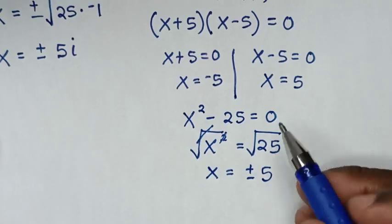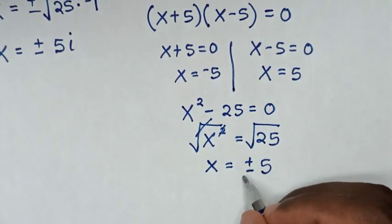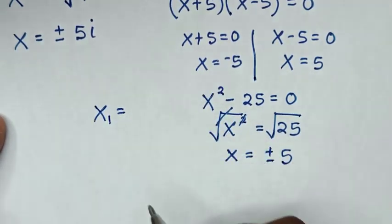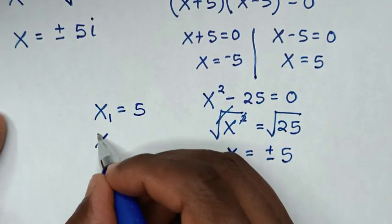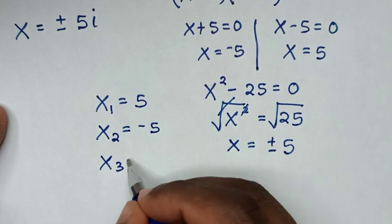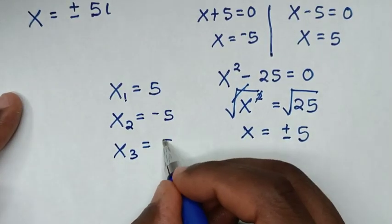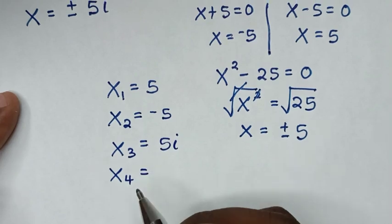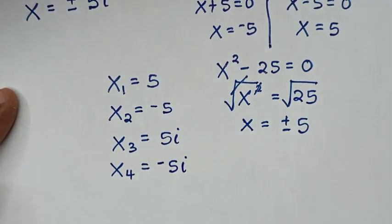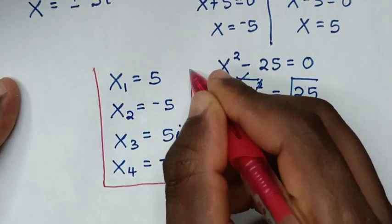It is easy to use this difference of squares formula so as not to miss the minus 5 solution. Therefore, from this equation we have four values of x: the first is x equals 5, the second is x equals negative 5, the third is x equals 5i, and the fourth is x equals negative 5i. These are all the values of x for this problem.